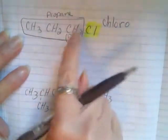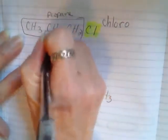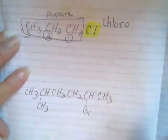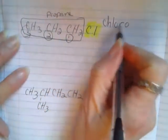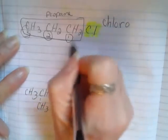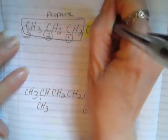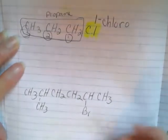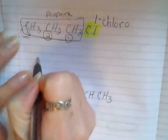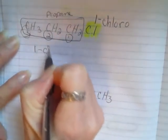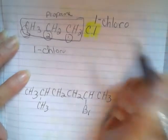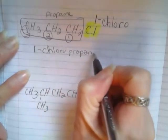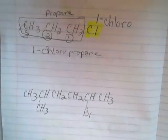When I begin numbering, I can start numbering here so I have the lowest substituent: one, two, three. My chloro attaches at number one, so I'm going to put one-chloro-propane. When I put it all together: 1-chloropropane.